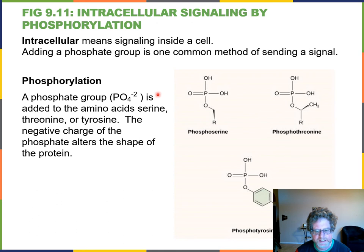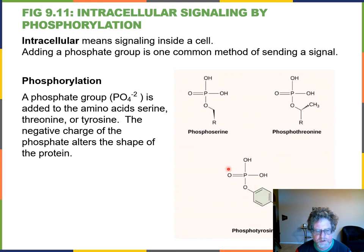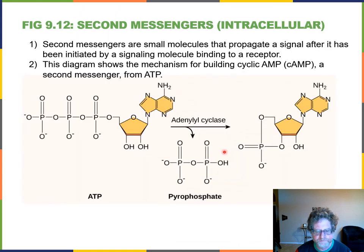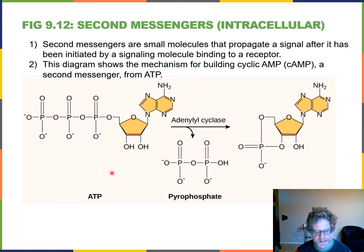Intracellular signaling by phosphorylation: phosphate is a phosphorus atom surrounded by four oxygens, and phosphate groups can be added to three different amino acid residues — serine, threonine, and tyrosine. Another way to amplify a signal is through a second messenger called cyclic AMP (cAMP), which is a modification of ATP: an enzyme converts ATP into cyclic AMP.